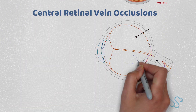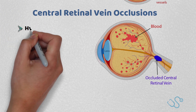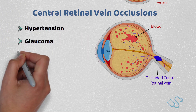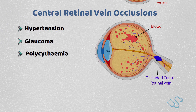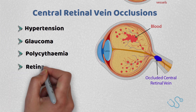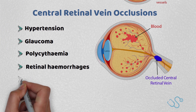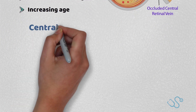Central retinal vein occlusion most commonly occurs in those with hypertension and glaucoma, but can also be seen in polycythemic patients, with a florid display of retinal hemorrhages on fundoscopic examination. This is a relatively common cause, typically seen with increasing age.